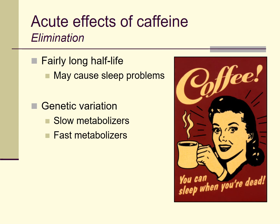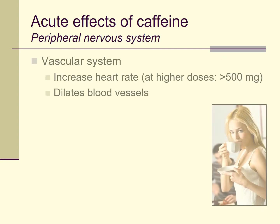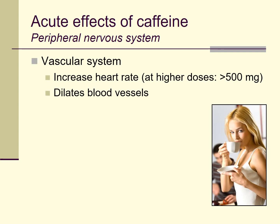Let's look at some of the acute effects of caffeine. In the peripheral nervous system, focusing on the vascular system: at relatively low doses — maybe the amount in a cup of coffee or tea — there's not a huge effect on heart rate. But at higher doses, if you have a couple cups or a strong sports drink, you can see increased heart rate, which can be quite marked. With a high dose of caffeine, you can get maybe a 15 beats per minute jump in heart rate or more. There's also an interesting effect in the peripheral vascular system where blood vessels will dilate, becoming wider, and this can actually cause your blood pressure to drop a little bit.